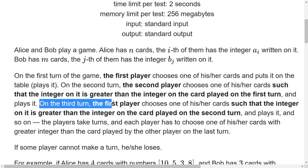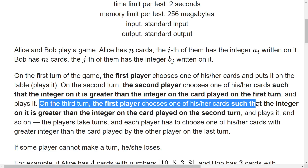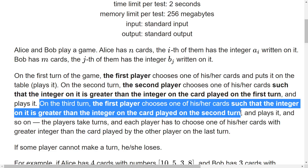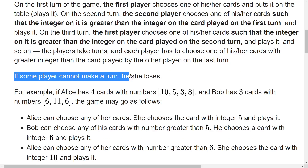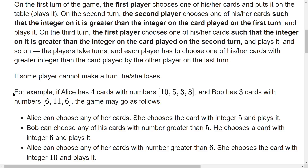On the third turn and so on, each player must play a card with a number greater than the card placed on the previous turn. The player who cannot make a turn loses the game. A player cannot make a turn if they do not have a card numbered greater than the card played on the previous turn.